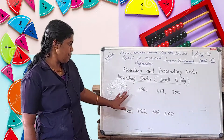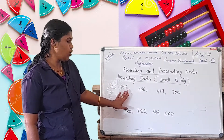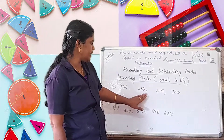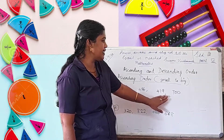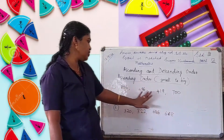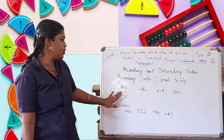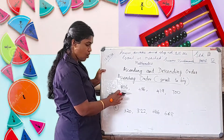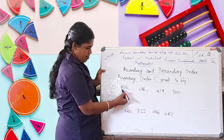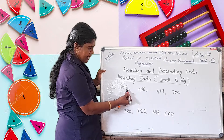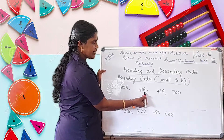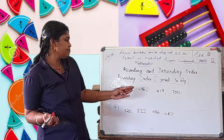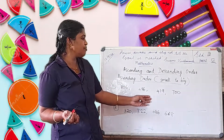Ascending order — listen, first question. Write in your notebook: 806, 436, 419, and 700. This is the question we have to do. Listen to how we can do this. We arrange the numbers in ascending order. The numbers are 806, 436, 419, and 700. Which is the smallest number from these numbers?